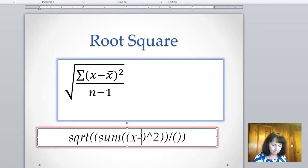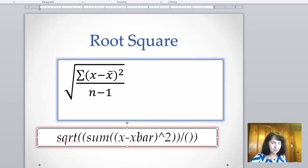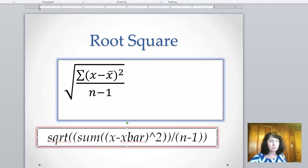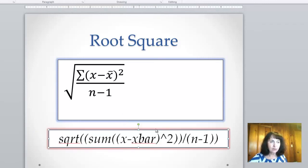x minus x bar, okay? To the power of 2. The first numerator is done, and then n minus 1 for the denominator. I hope that you will get used to doing this real fast and will put the necessary number of parentheses.